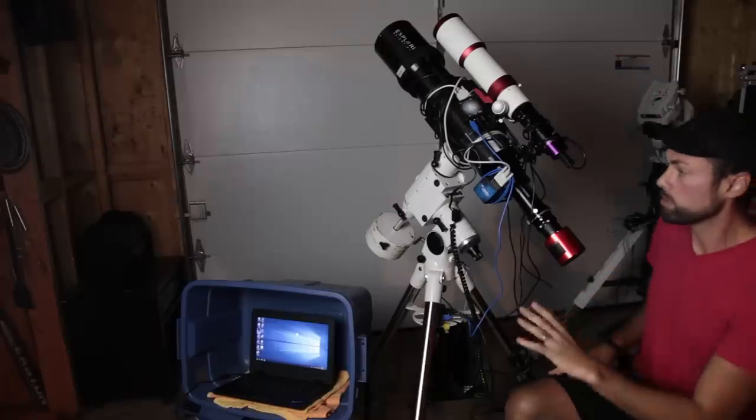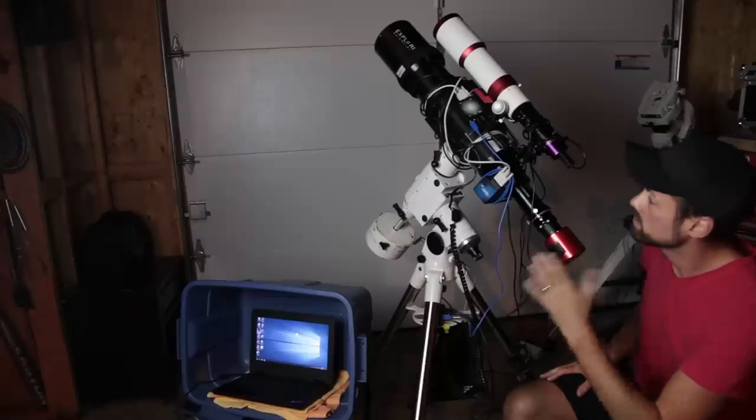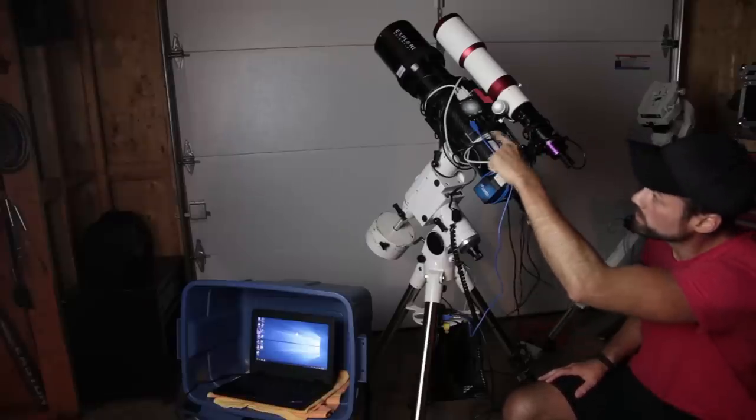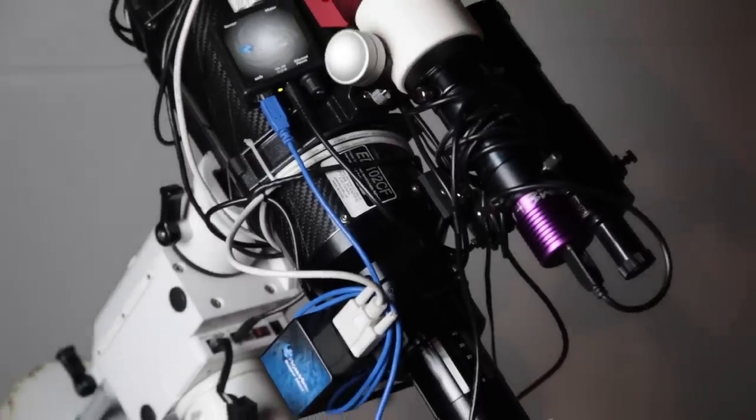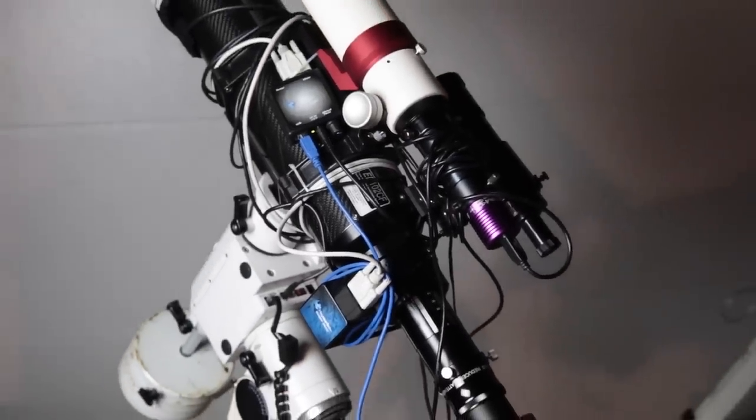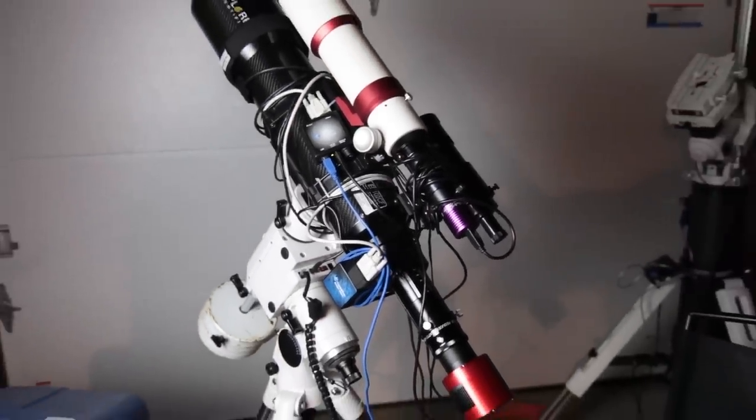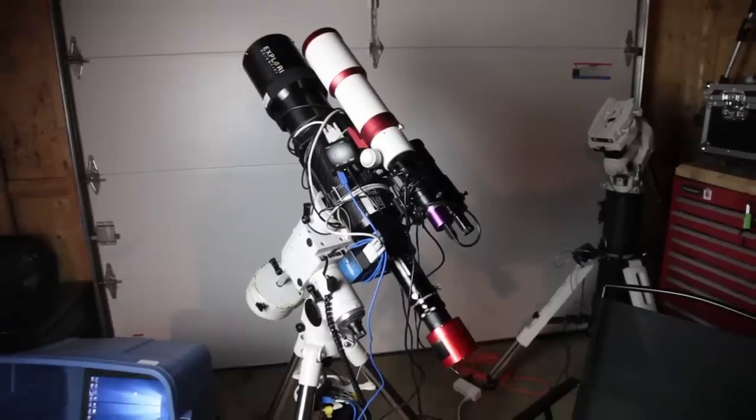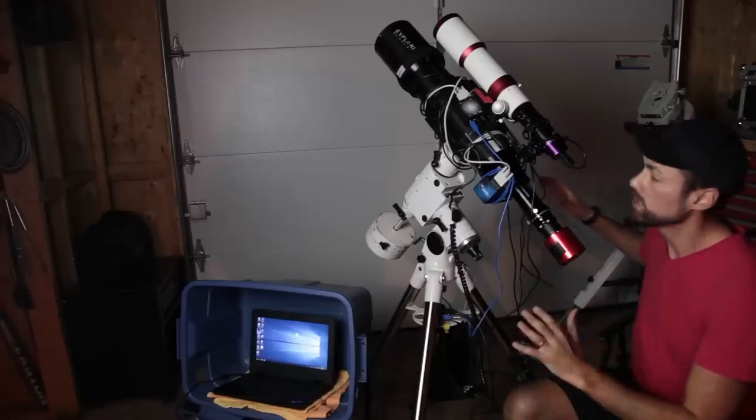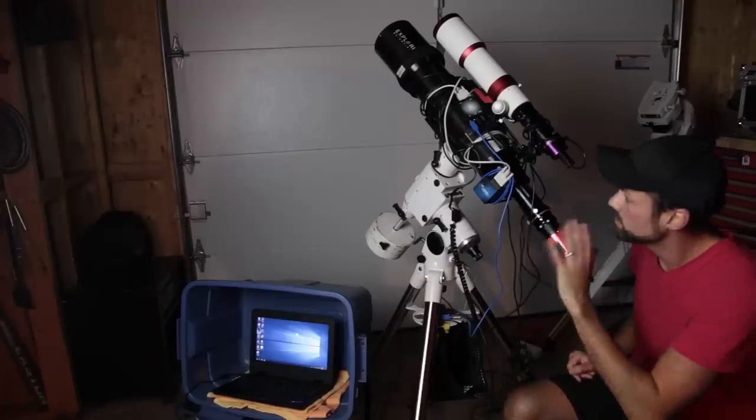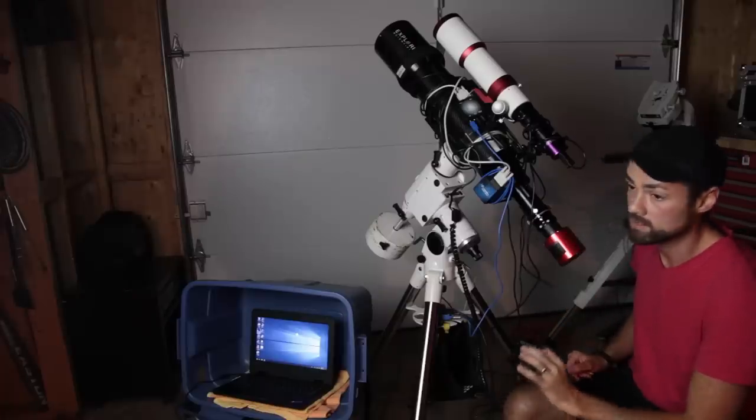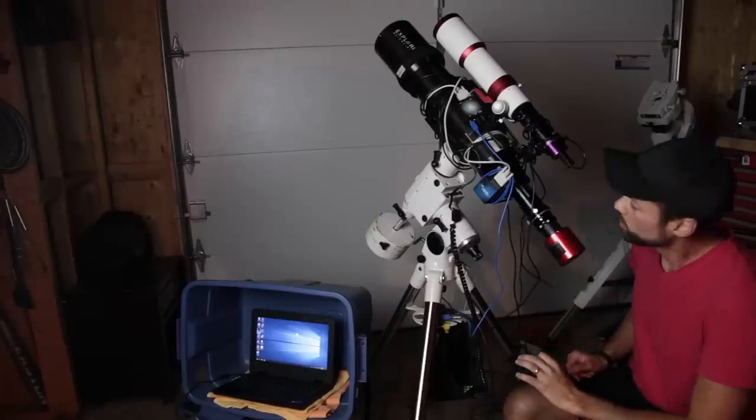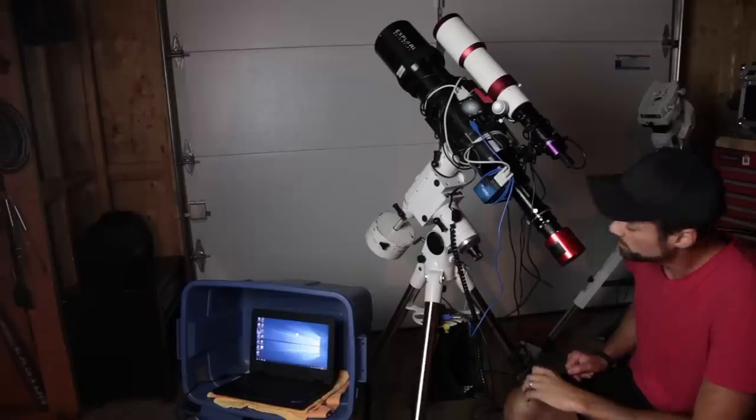So for those that have seen my rigs before, it might look a little bit different. I've got some Pegasus Astro gear on here. This is the dual motor focus controller and then the stepper motor kit, which I got earlier this year. And then I've also got a mini pocket power box on the other side. I'll be covering this stuff later, but I just thought I'd point it out as to why it's all kind of crazy looking here. And I certainly need to get the wires sorted out and I'm actually looking forward to it.